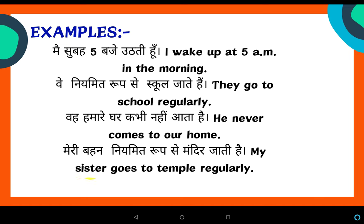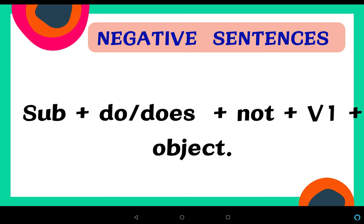'My sister' is the subject here. The action is 'जाना' — go. Sister is singular, so we add S: goes. Where is she going? To temple. And 'नियमित रूप से' means regularly. So: my sister goes to temple regularly. These were affirmative sentences.